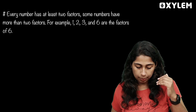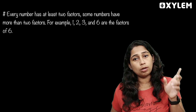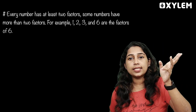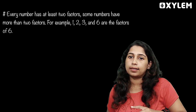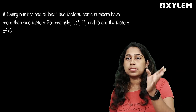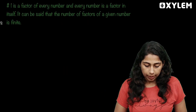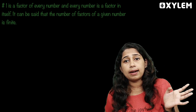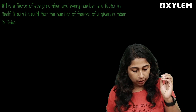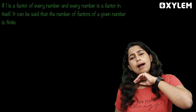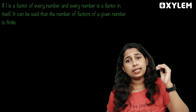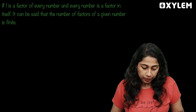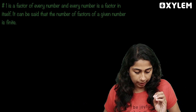Some numbers have more than 2 factors. For example, 1, 2, 3, and 6 are the factors of 6 — that is 4 factors. The factors of 2 are 1 and 2. The factors of 3 are 1 and 3. Also, 1 is a factor of every number, and every number is a factor of itself. The number of factors of a given number is finite.